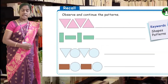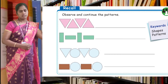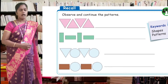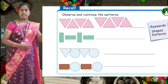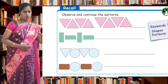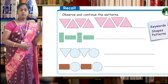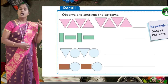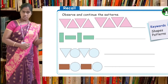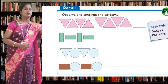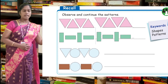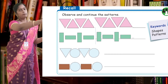First one: a triangle pointing downwards, next a triangle upwards, then downwards, again upwards — then what comes next? A triangle pointing downwards. Like that you can draw and follow the pattern. Next: a rectangle in standing position, then a rectangle in sleeping position, then sleeping, then standing, then sleeping — then what comes next? A rectangle in standing position. Continue the pattern.